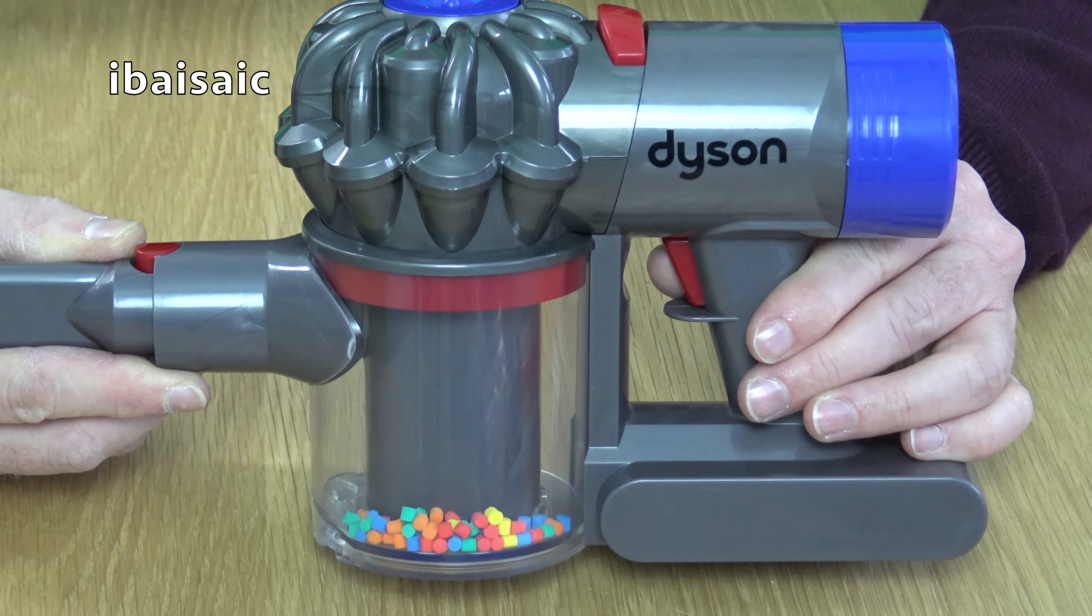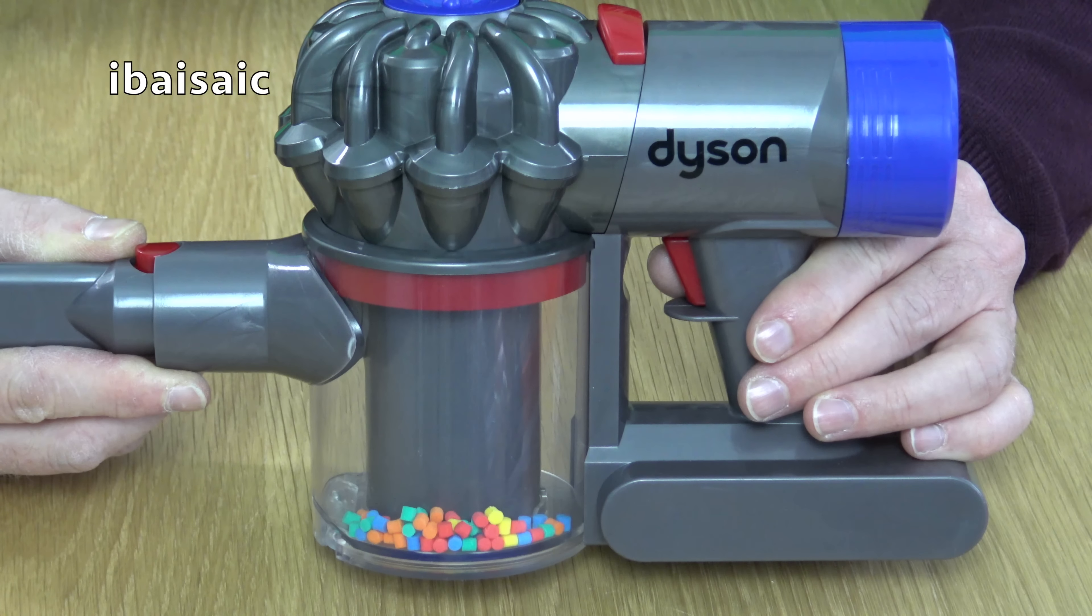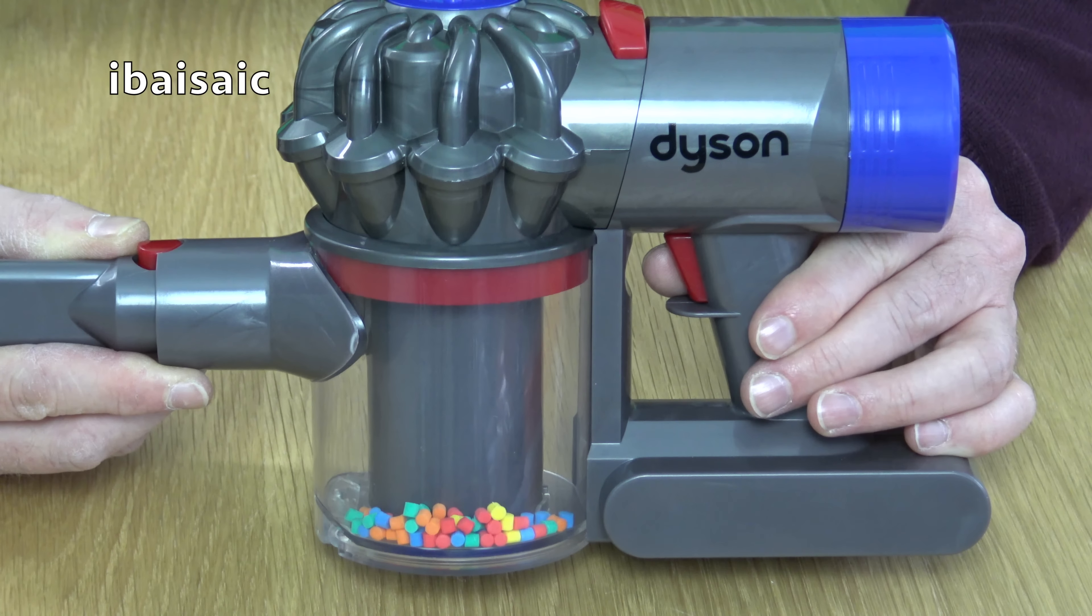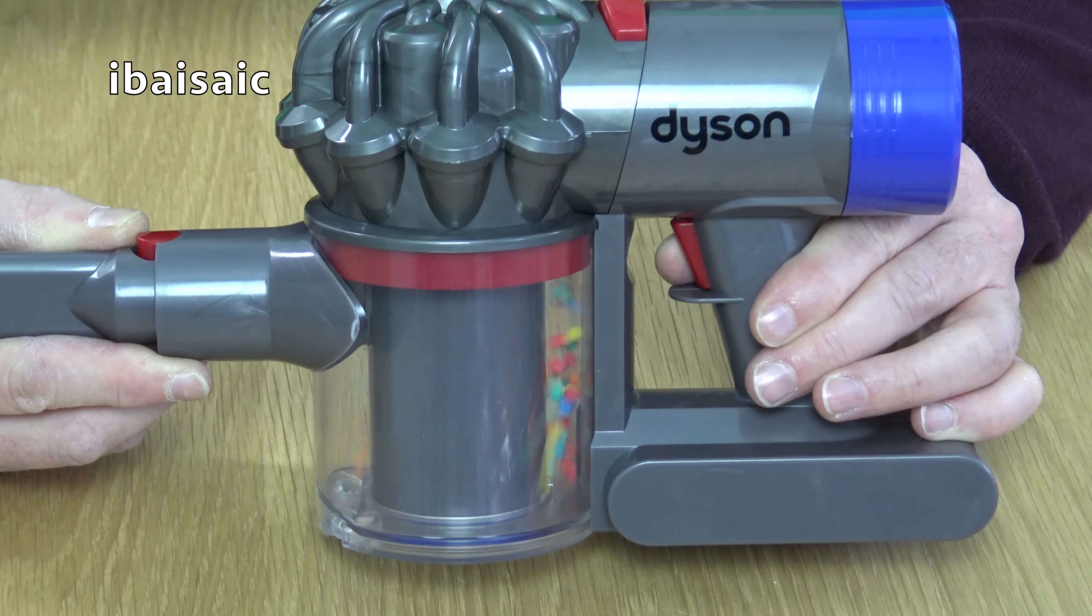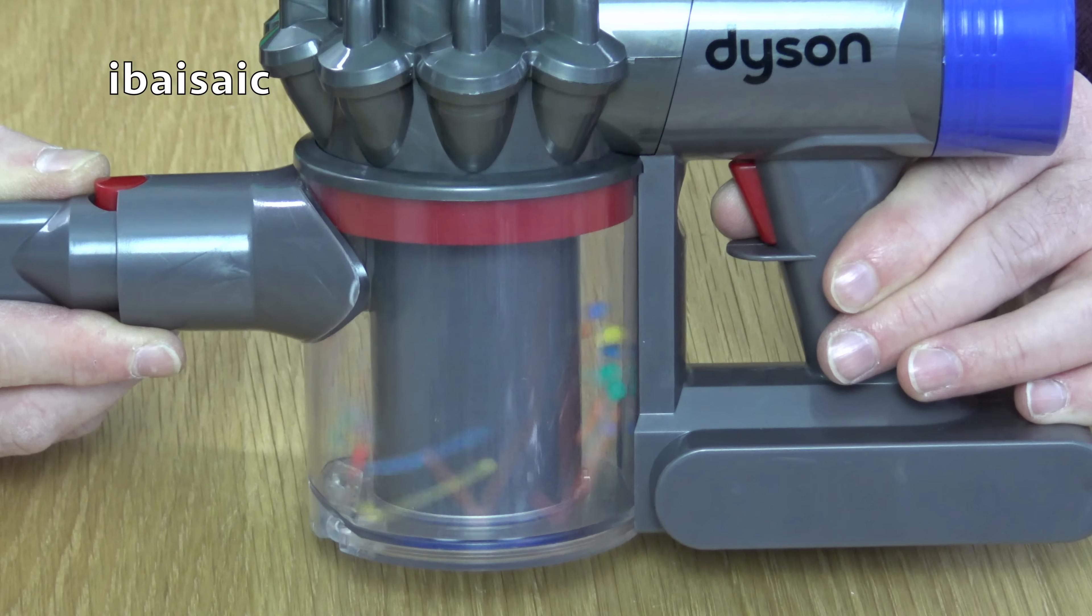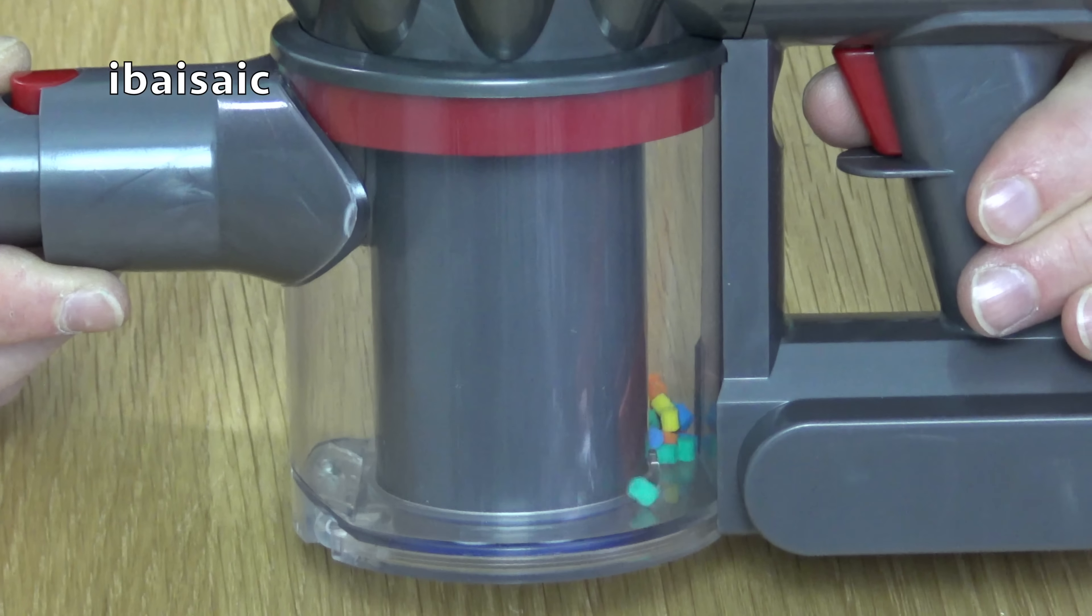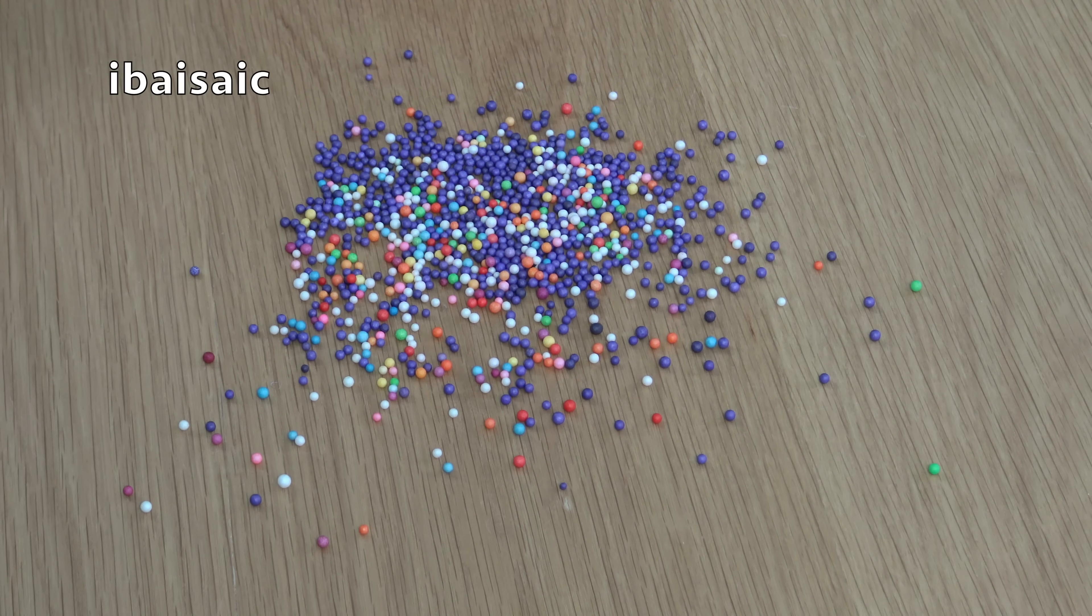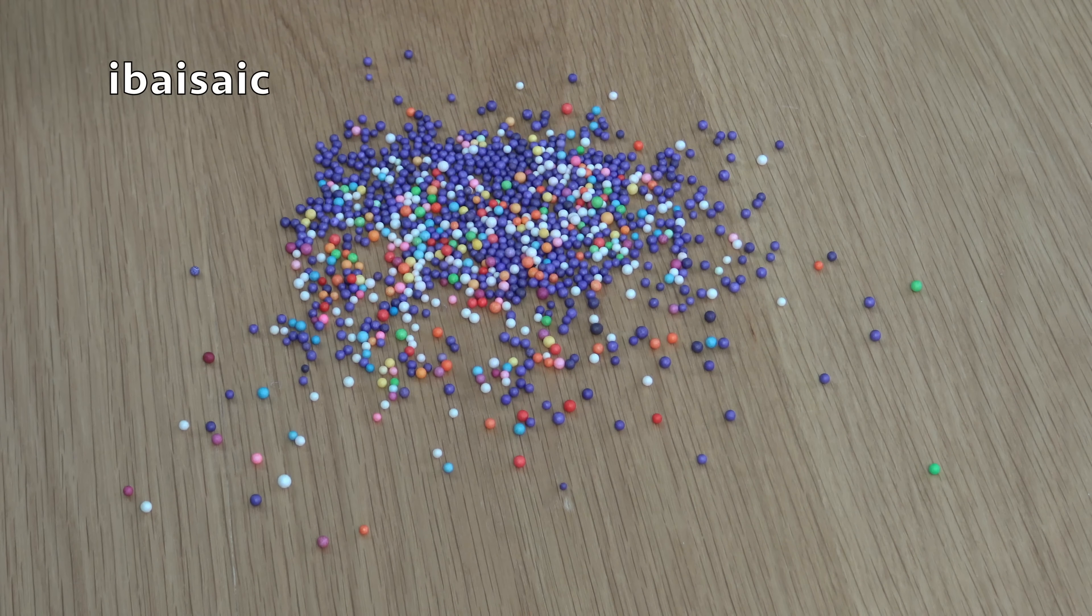And just like a real Dyson, it's got cyclonic action. Have a look at the beads in the canister when I squeeze the trigger. Oh dear. I've made a bit of a mess. But don't worry, the Dyson will pick it up. Well, I hope it will.